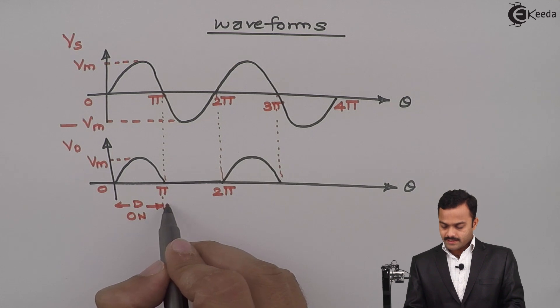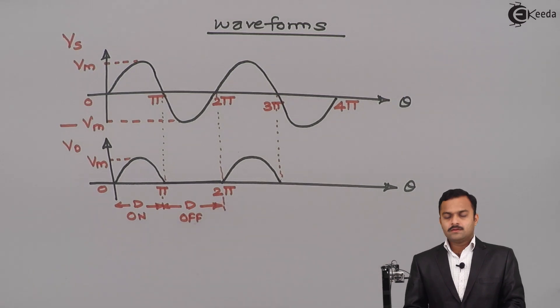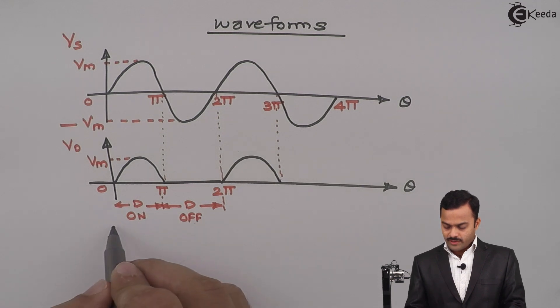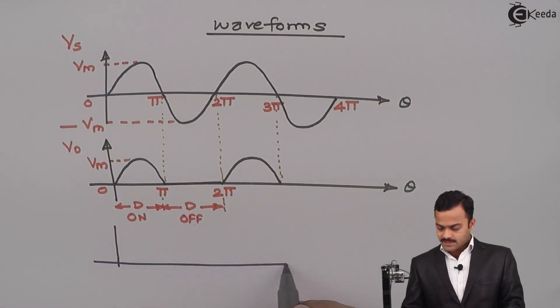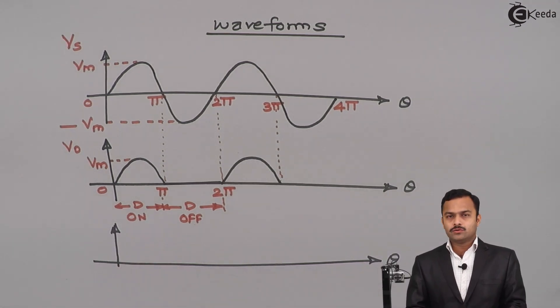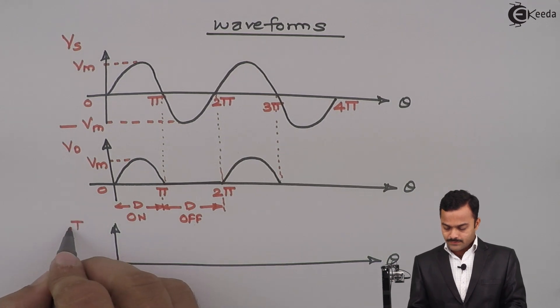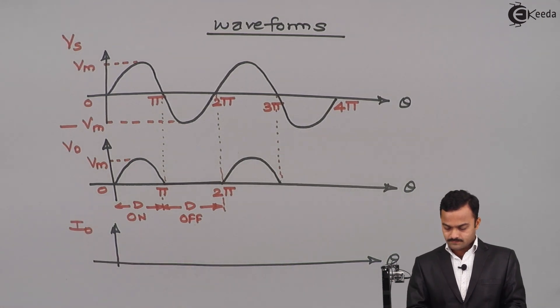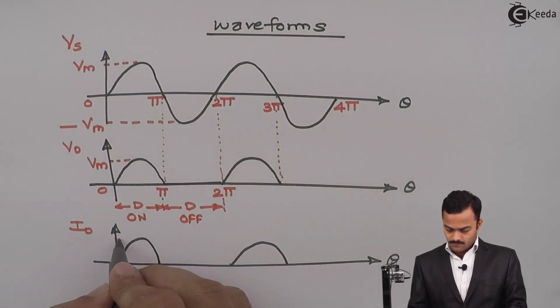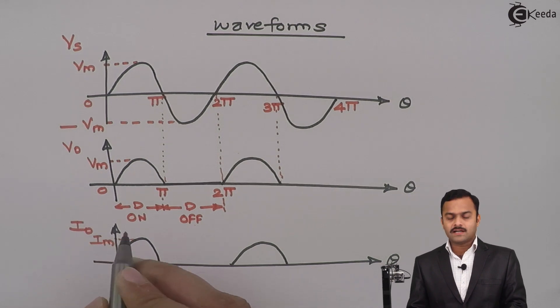During the negative half cycle, diode D is off. This is the waveform for output voltage. What will be the waveform for output current? Obviously it is the same as the output voltage. The only thing is that its magnitude will be divided by load resistance RL. So the output voltage and output current waveforms are absolutely the same, with maximum value of current at these intervals.